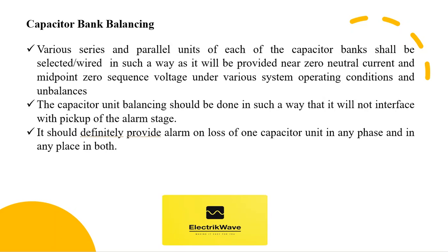Capacitor bank balancing shall be done in such a way that it will not interfere with pickup of the alarm stage. However, it should definitely provide alarm on loss of one capacitor unit in any phase and in any place in both set 1 and set 2. It can be proved by getting actual site measurement of the system voltages for R, Y and B phases for a fairly good period to get the extent and trend of the system unbalances present at site. The capacitor counter-balancing should be done accordingly.